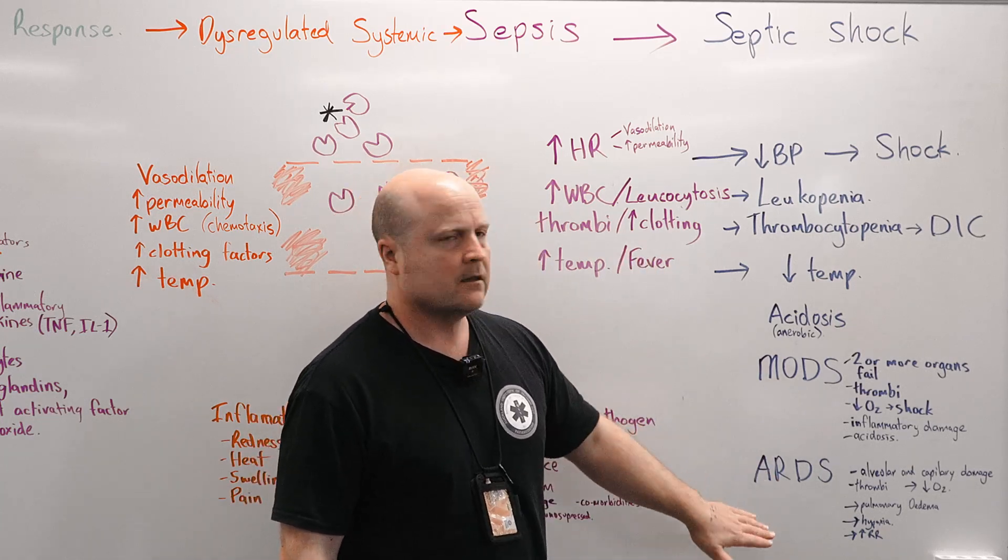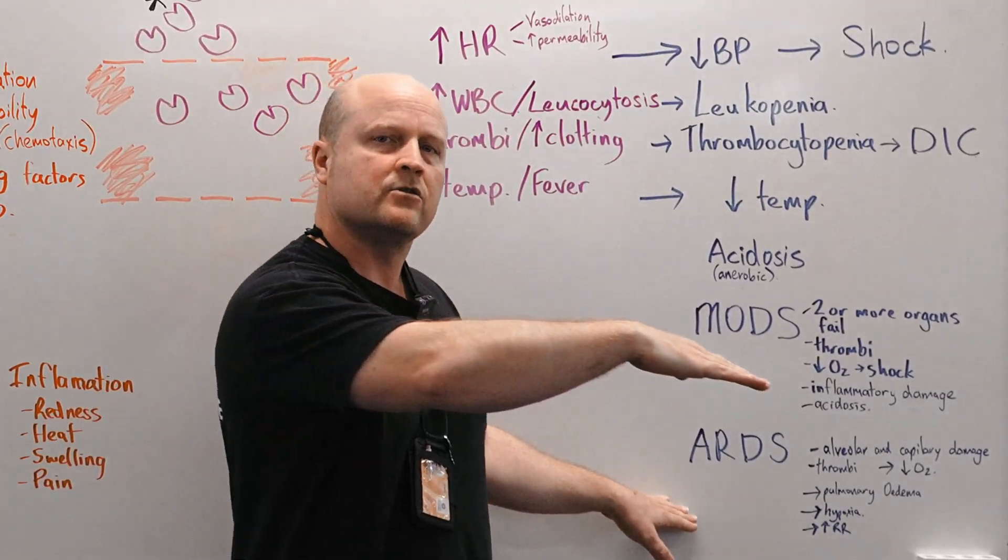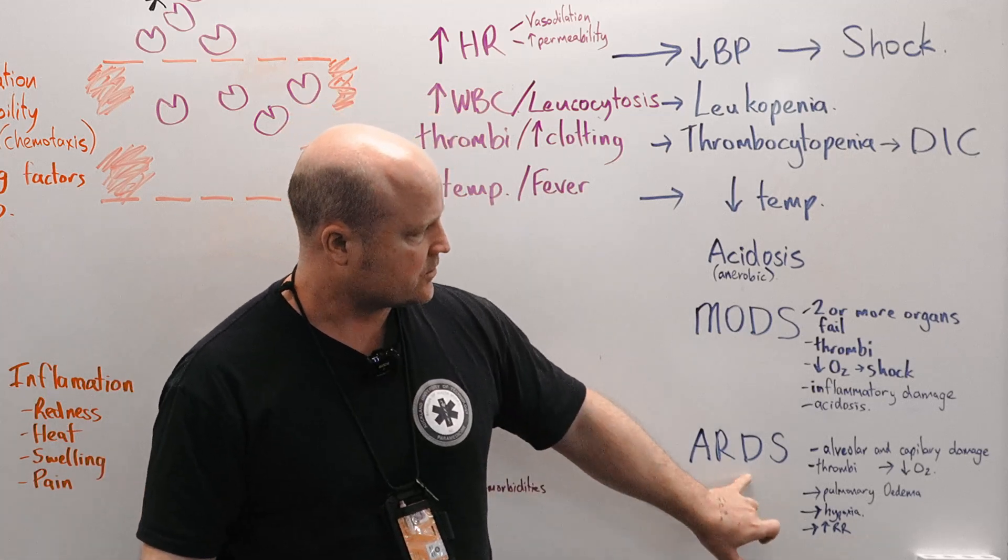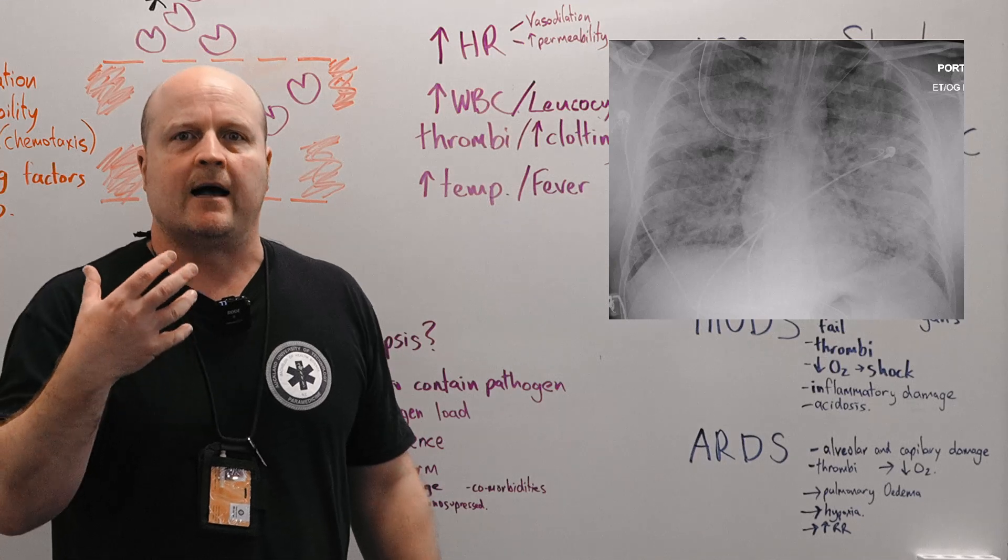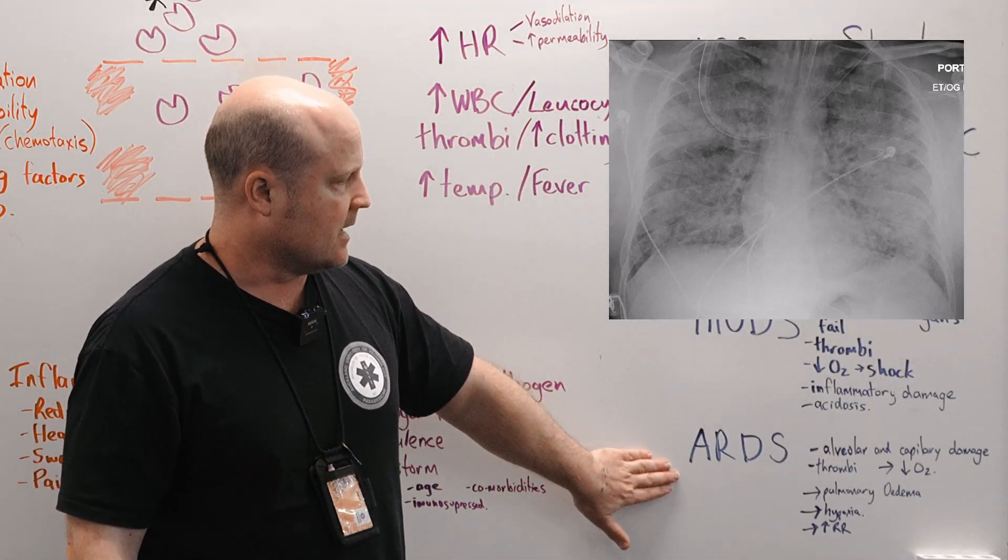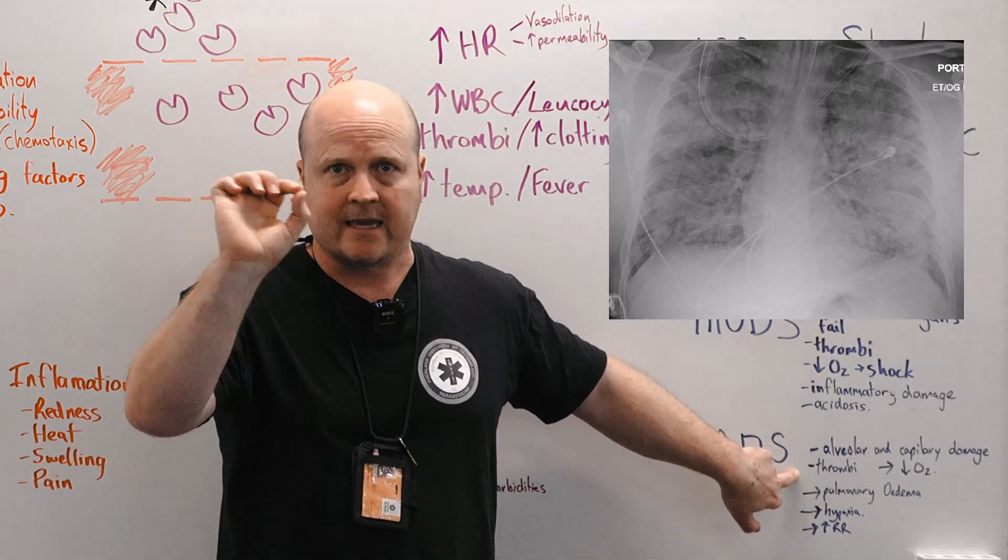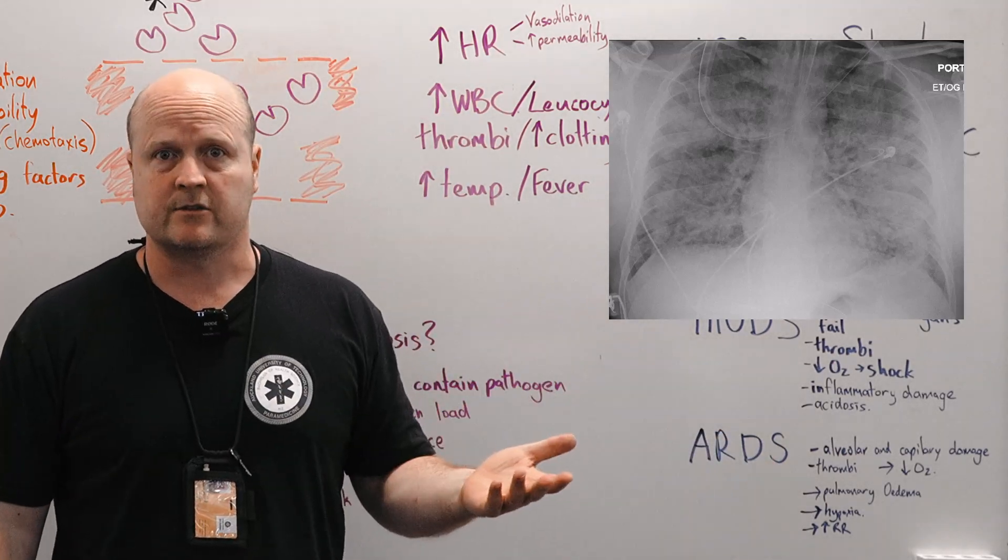The other thing that we can get as we follow through our sepsis continuum down to septic shock is ARDS. So acute respiratory distress syndrome. So this is where we get alveolar and capillary damage in the lungs. So remember we've got these thrombi, these little blood clots that can be plugging up the blood flow to the lungs, which is going to cause decreased oxygenation.